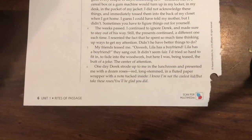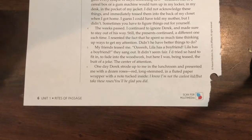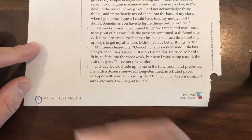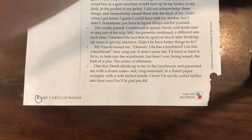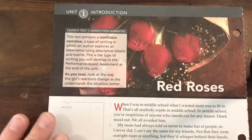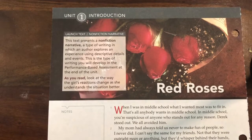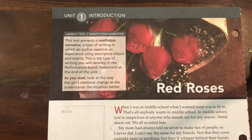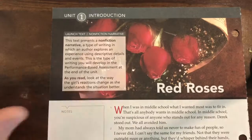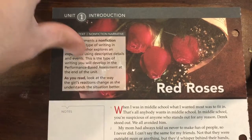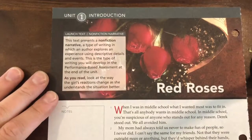Welcome to Mr. Surface's videos using the textbook. The pages we'll be annotating today are pages 6 and 7. Page 6 begins the introductory story to Unit 1, Rites of Passage. The essential question in this unit is: what are some milestones on the path to growing up? We'll want to keep that essential question in our heads as we read and annotate this text.